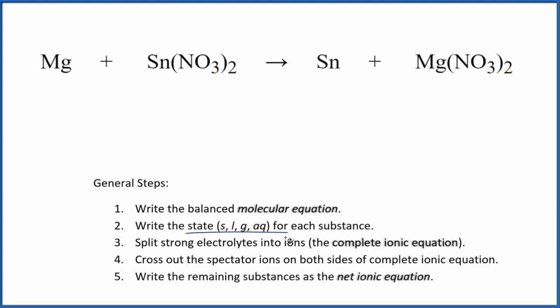Next, we need to write the state for each substance. That looks like this. Both magnesium and tin, they're just metals, so they're going to be solid. And then nitrates, they're very soluble. Compounds that have nitrates in them are soluble. These will be aqueous, they'll break apart into their ions.